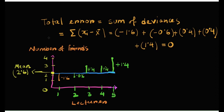The easiest way to understand this equation is to look at the difference between the data we observe and the model fitted. We can determine whether the model is accurate by looking at how different our real data are from the model we have created. In this case our model is the mean, and the line representing the mean can be thought of as our model — 2.6 is the model value, and the circles are the observed data.